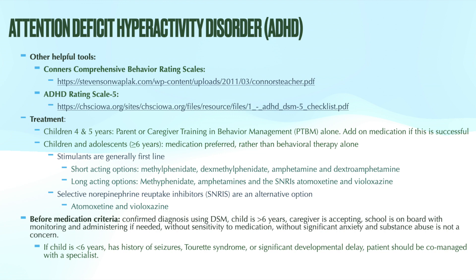Treatment options for patients with ADHD include psychosocial interventions, pharmacotherapy, and educational interventions — alone or in combination. Generally, this can be managed by the primary care provider alone for patients between four and 18 years old without comorbidities. If the child has coexisting psychiatric, neurological, or medical conditions, or has an inadequate response to treatment, then a referral is definitely indicated. The caregiver and patient must remain very involved in treatment as well.